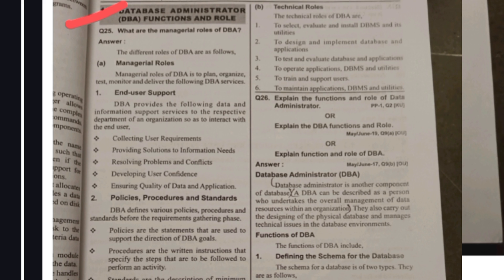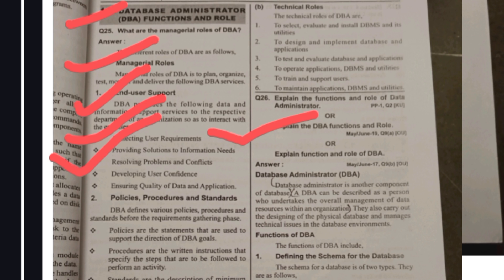The next important question in Unit 1 is: who is a DBA and what are his roles and responsibilities? DBA stands for Database Administrator. His first role is End User Support — he interacts with end users and acts as the middle person between the person seeking data and the server providing data. His responsibilities include collecting user requirements and providing solutions to information needs.